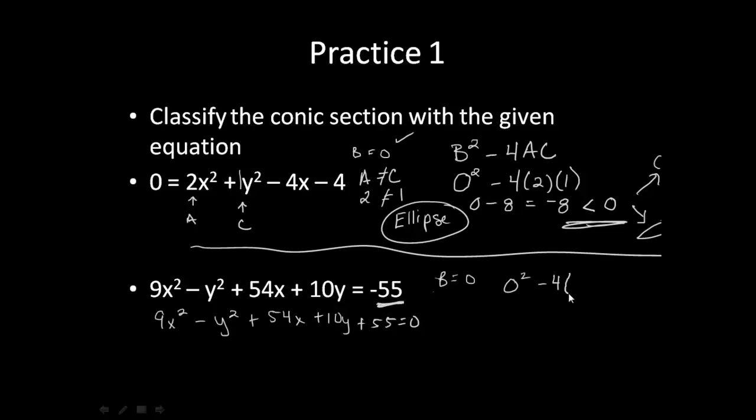Minus 4 times our a comes from our x squared term, so that would be a 9. And our c comes from our y squared term, which in this case is a negative 1. Well, when I multiply that out, I get zero minus 4 times 9 times negative 1 gives me a negative 36.